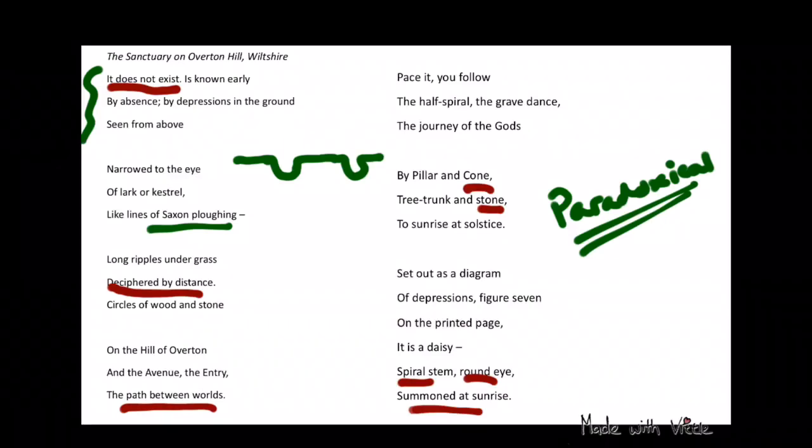And they created plow lines, so digging in the dirt so that you could grow things. And so she said these lines that are in the ground almost have the precision of being plowed there, so they're certainly man-made. This is not a natural phenomenon in any way.